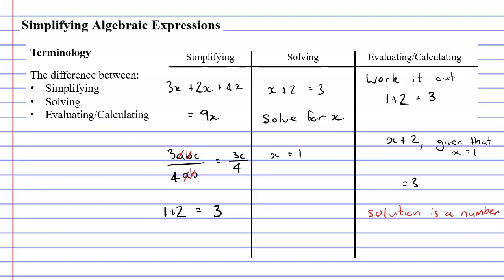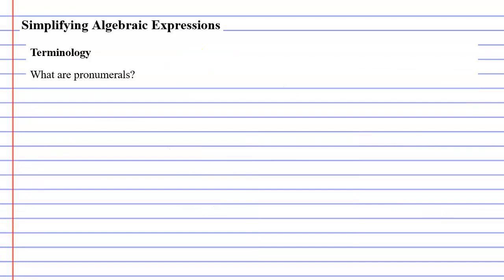by stating that it equals 3, I have also simplified my expression because 3 is a more simplified version of 1 plus 2. Which means that you can use the word simplify in place of evaluating and calculating. But you can't do it the other way around. You can't use the words evaluate or calculate in place of simplifying.